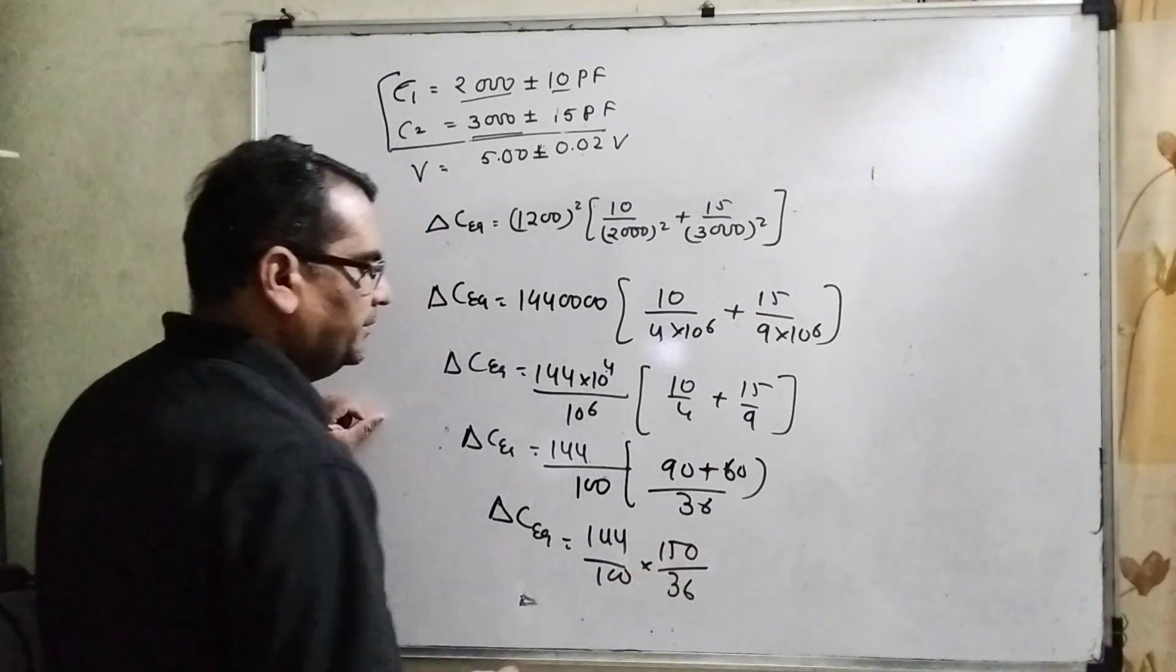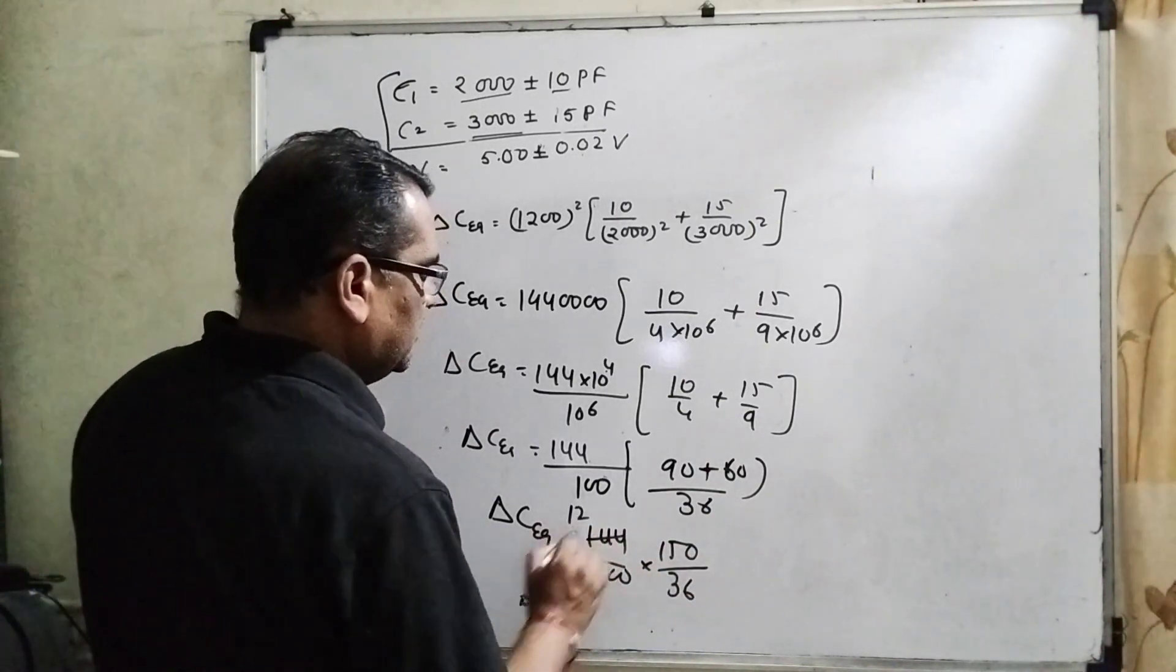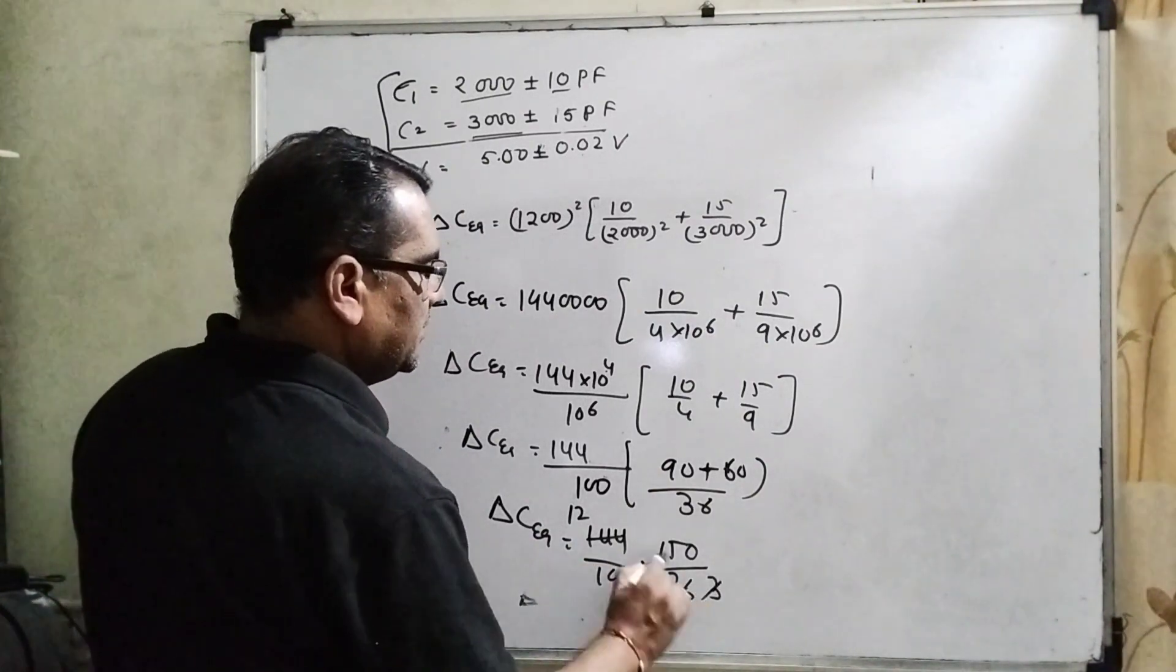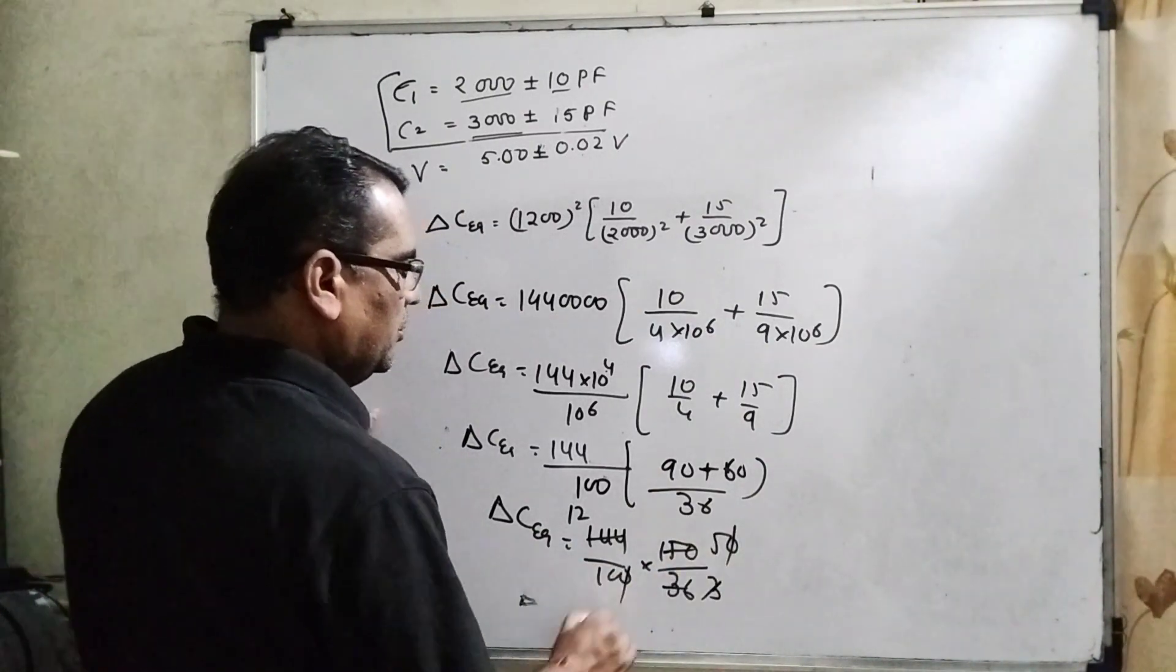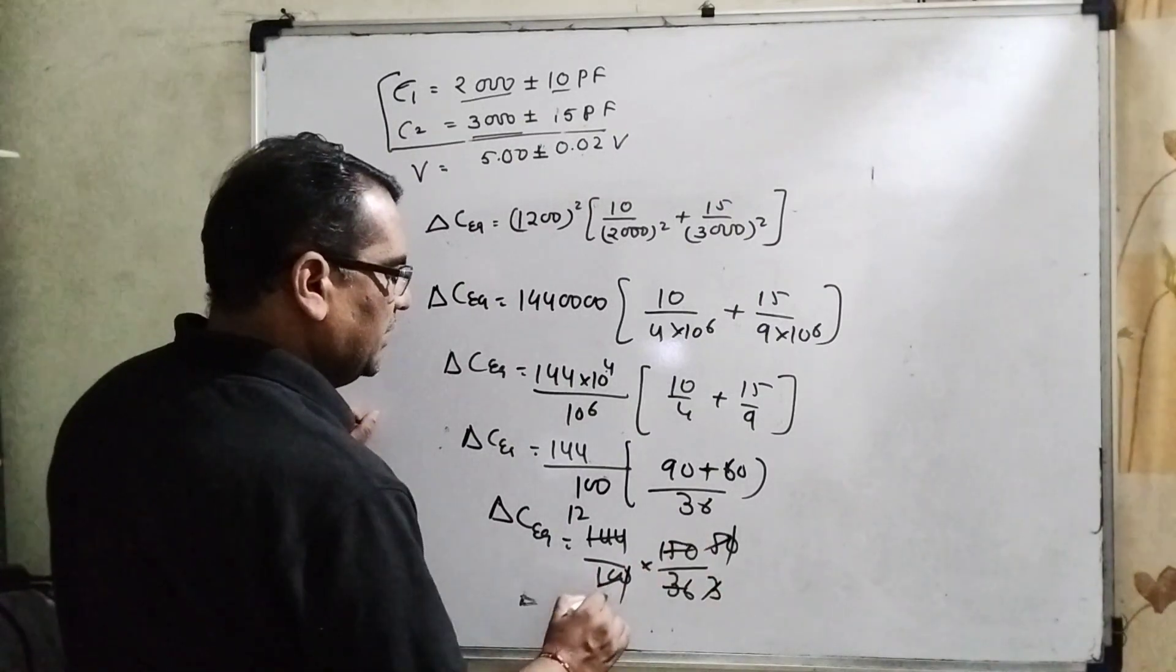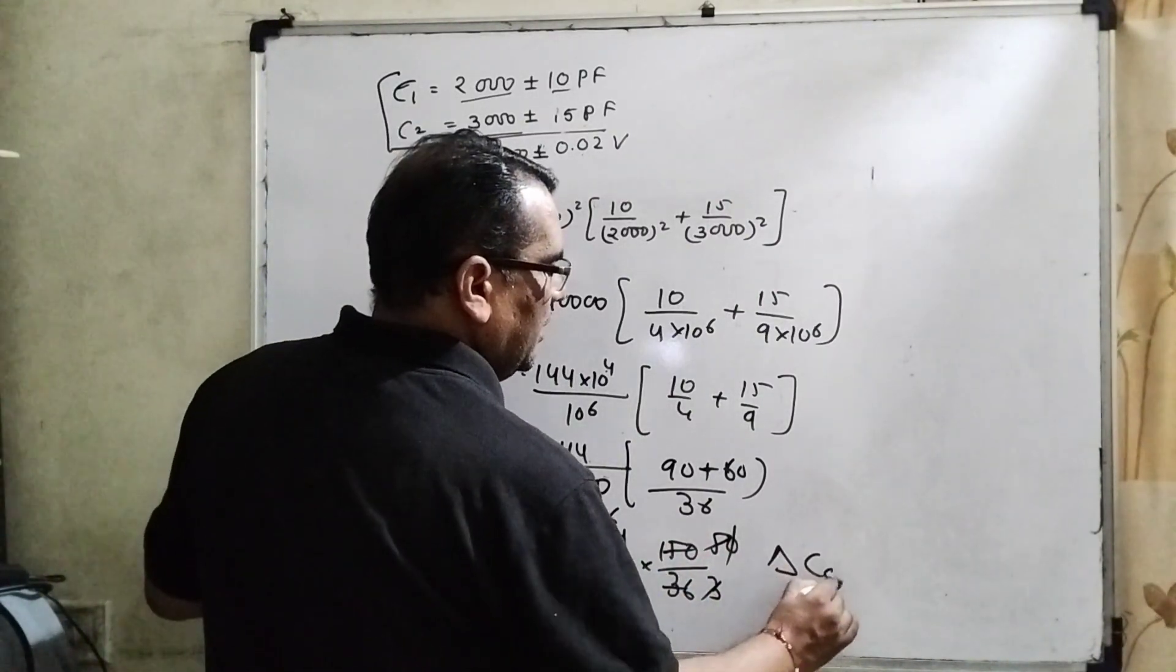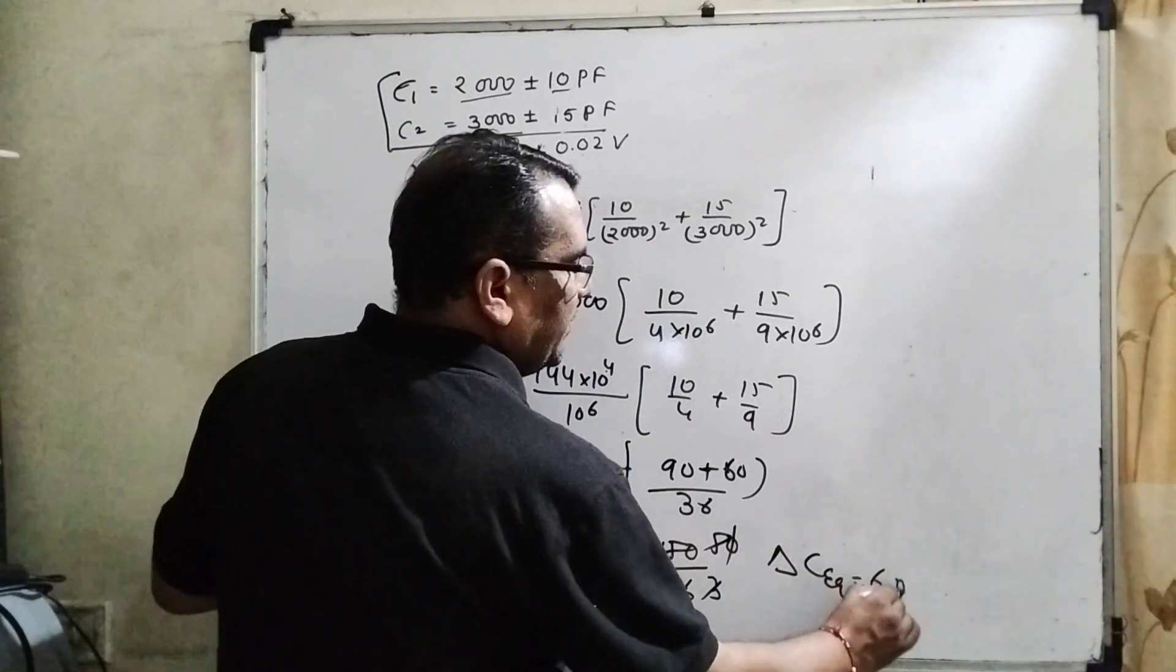12 times 12, 10 to the 4. It is 3 times 50. Cancel out: 5, 10. 2, 6 are 12. So delta C_eq is 6 picofarad.